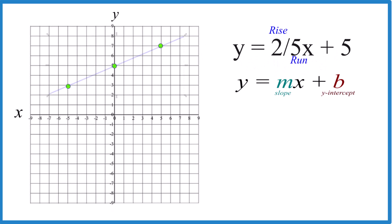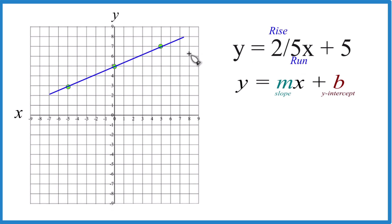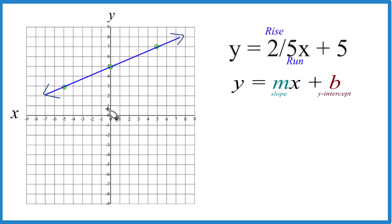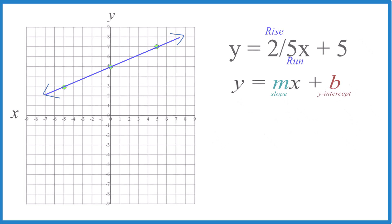Let's put a line through that. We'll put arrows to show it goes to infinity, and there you go — y equals 2 fifths x plus 5. This is Dr. B graphing y equals 2 fifths x plus 5 using slope-intercept form. You could use a table of values and you'd get the same graph. Thanks for watching.